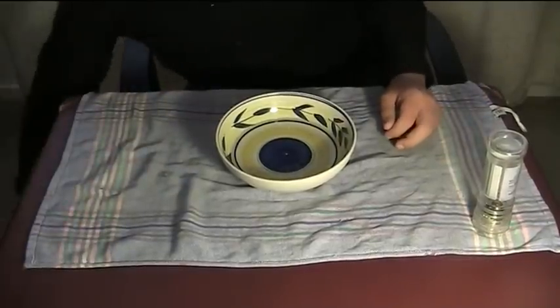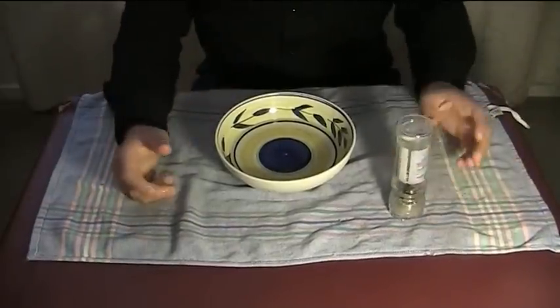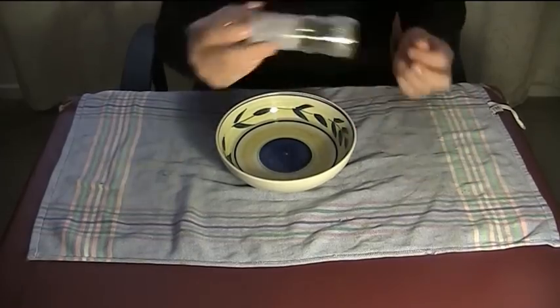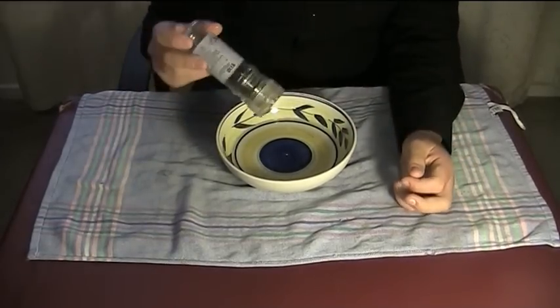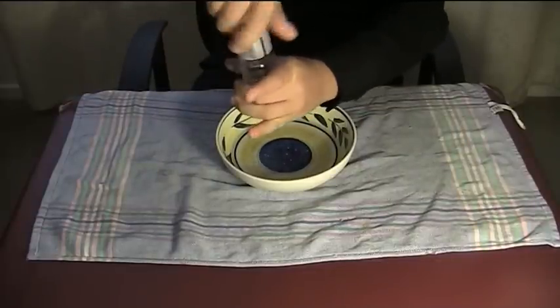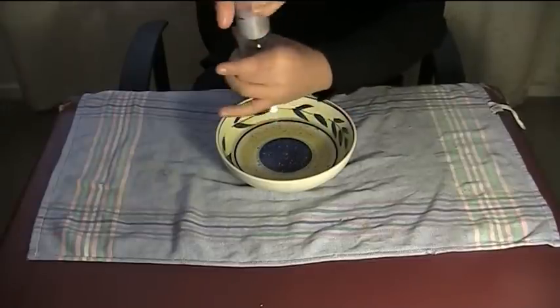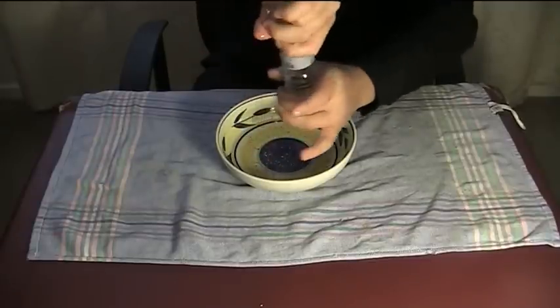So first of all, hide your dishwashing liquid. When I perform this trick, I actually like to ask my spectator to put the pepper onto the water. So I'll get them to crack some of that pepper over the water just like that. And this is cool because the pepper is going to float on top of the water, which is what you want it to do.